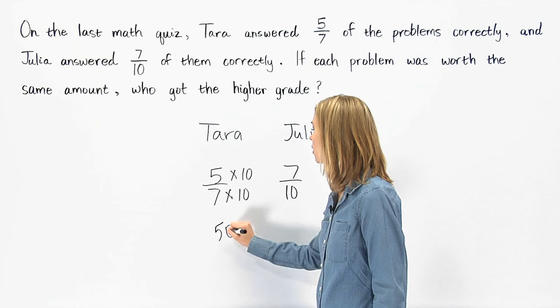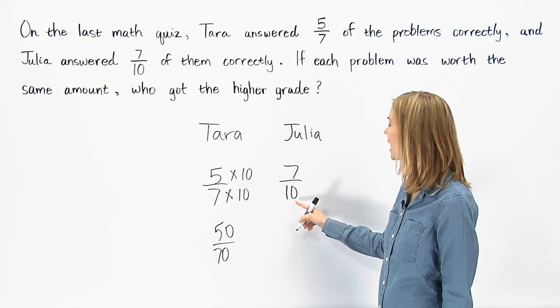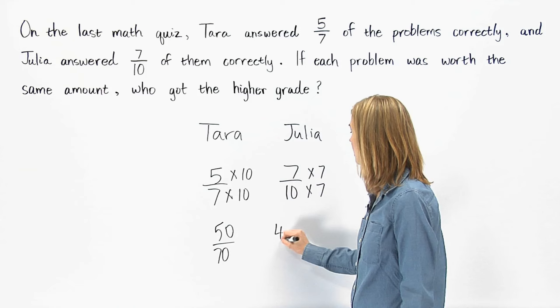To get seventy in the denominator of seven-tenths, we multiply the numerator and denominator by seven to get forty-nine over seventy.